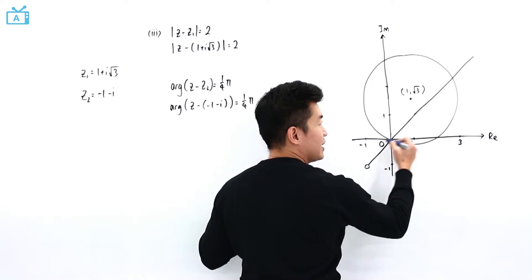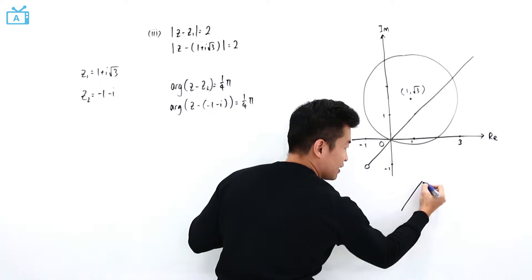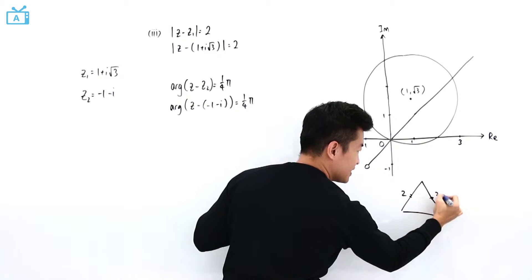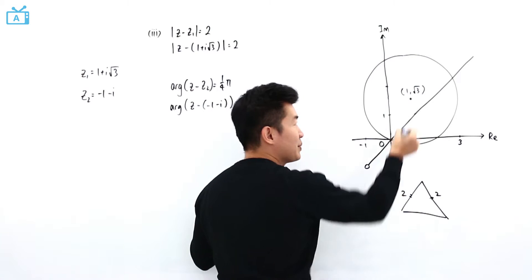which means we have an isosceles triangle where this distance is 2, and this distance is also 2. If you think about it,